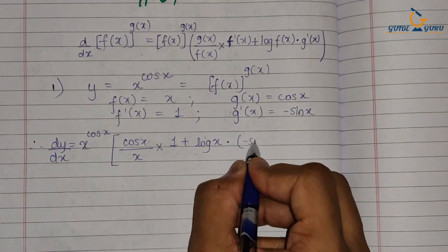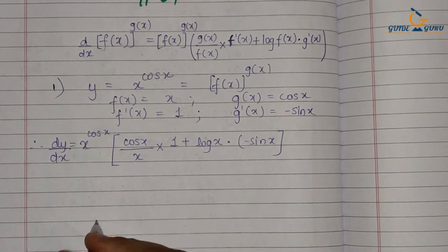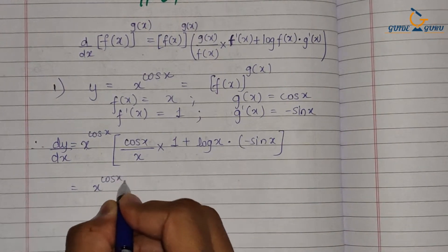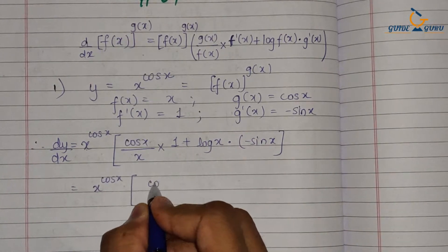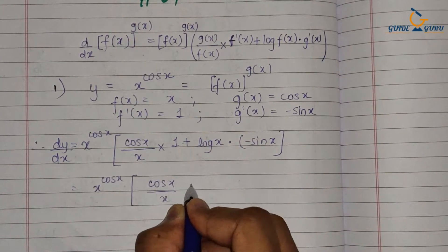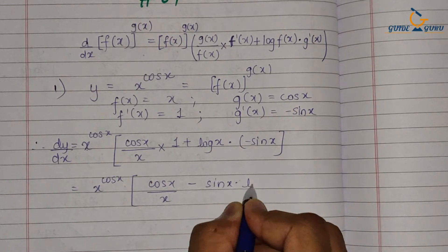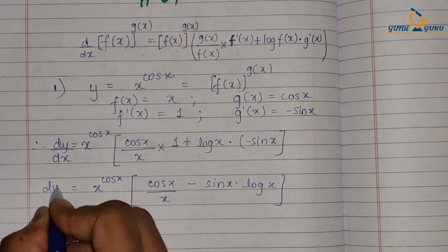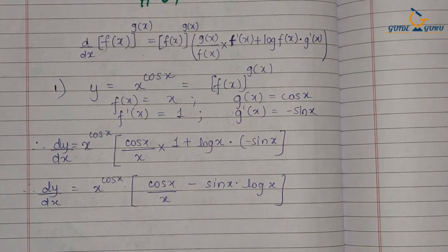−sin x, and we are done. Writing the simplified form: x^(cos x) times [cos x / x − sin x · log x]. With practice you will be able to get the answer in just 5 seconds.